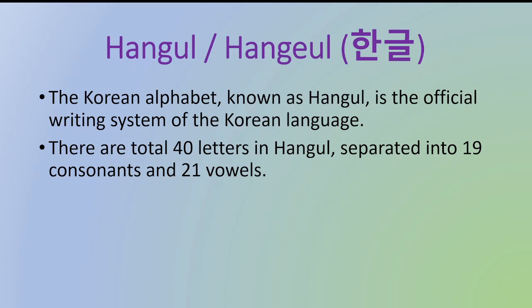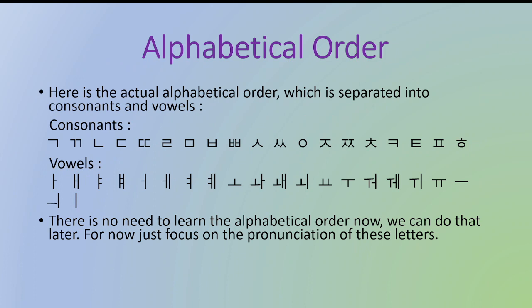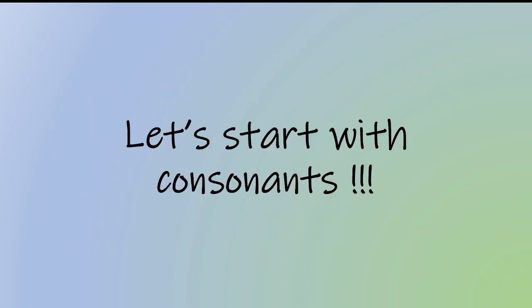Hangul consists of total 40 letters which are separated into 19 consonants and 21 vowels. This is the actual alphabetical order which is separated into consonants and vowels — you can see that on the screen. But abhi aapko ye learn karne ki need nahin hain, because humme koi nursery ka exam to dena nahin hain jis mein humse order poochha jayai. For now, just focus on the pronunciation. So, let's start with consonants.